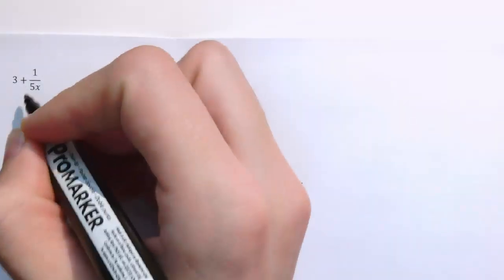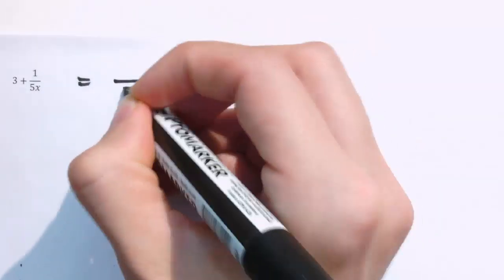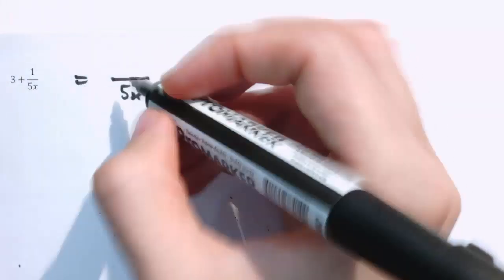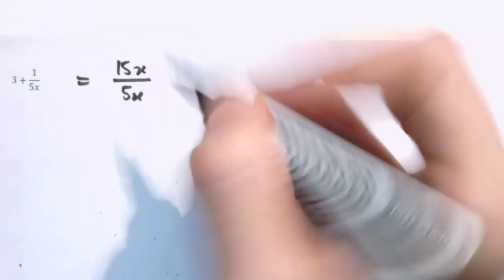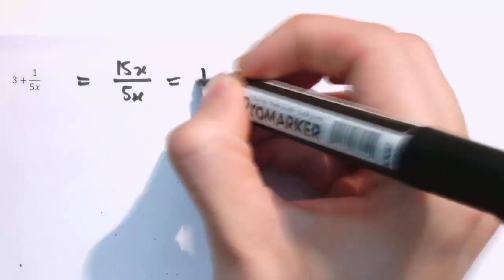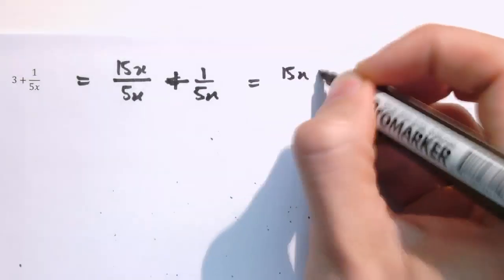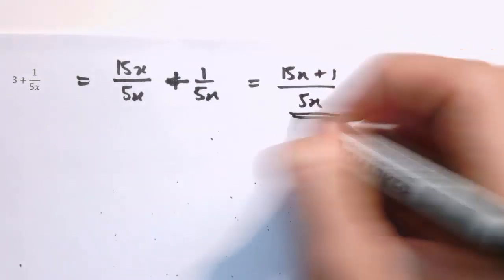The expression 3 plus 1 over 5x sometimes confuses people because the left term isn't a fraction, but we can think of it as 3 over 1. We still need to get it over a denominator of 5x: 3 times 5x is 15x, so we get 15x over 5x plus 1 over 5x, and combining the numerators gives 15x plus 1 over 5x.